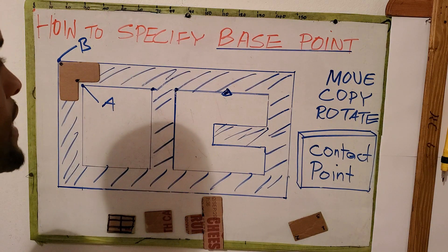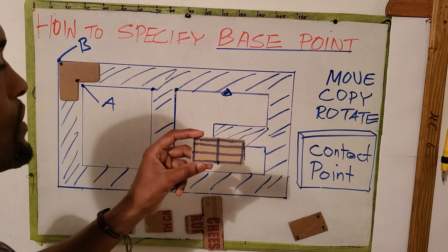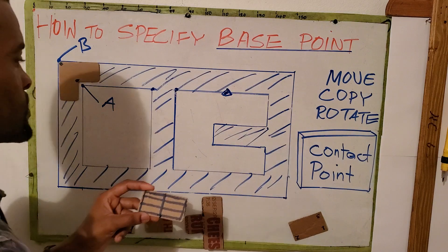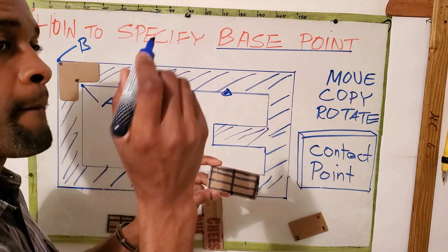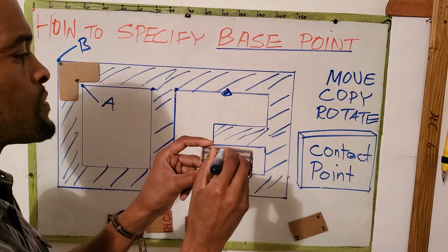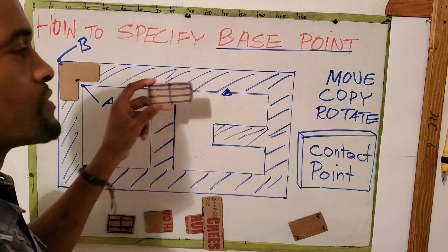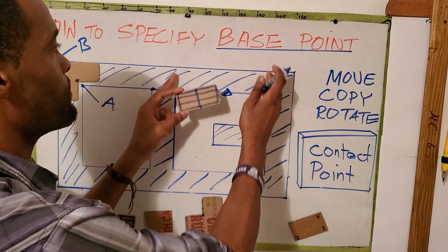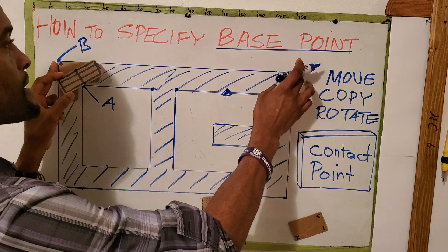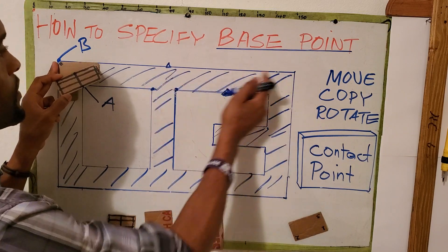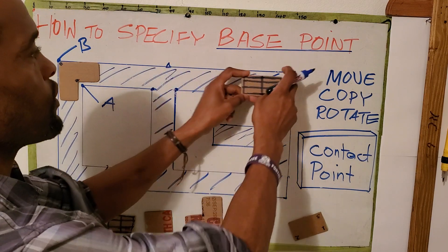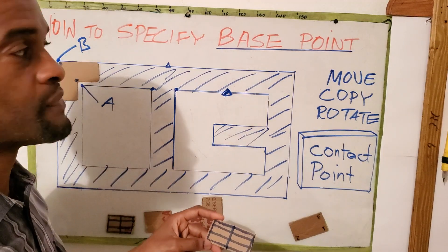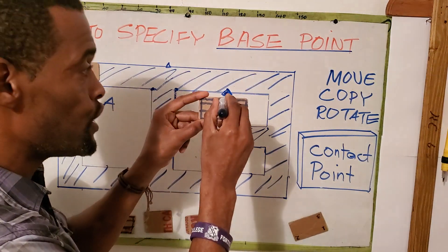Question: what would be the likely effect if I had chosen here as my base point instead? After typing Copy or Move and selecting the object, the command bar prompts to specify the base point. If I choose that point, it would be difficult to snap onto the midpoint of this line, because the midpoint of that line would be somewhere down here — so it would tend to snap to an endpoint or some other unintended point, posing a challenge.